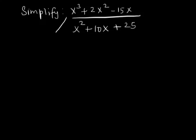The numerator here is x cubed plus 2x squared minus 15x, and the denominator is x squared plus 10x plus 25.